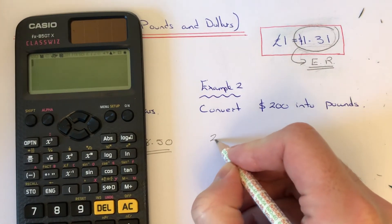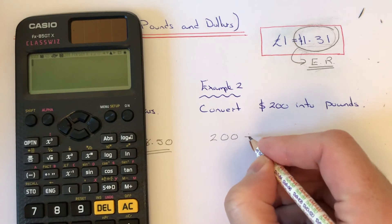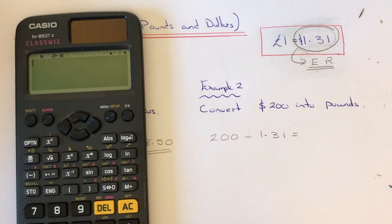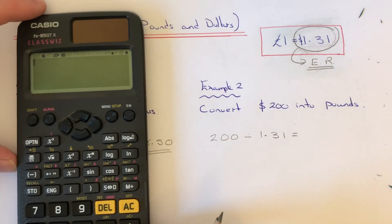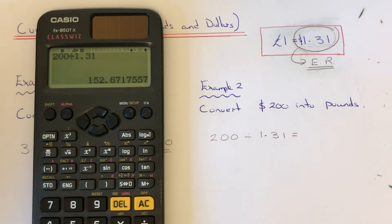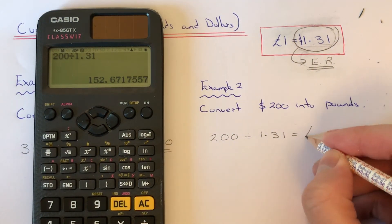So again, we just type that in on your calculator. Okay, this time we'll have to round it off to two decimal places, so it'd be 152 pounds and 67 pence.